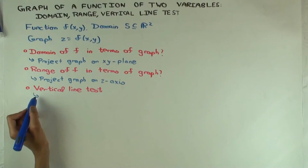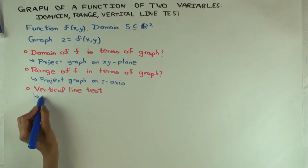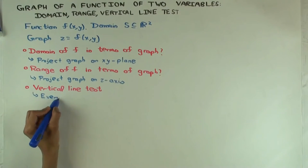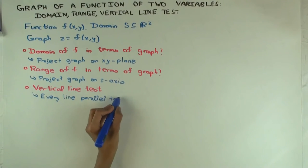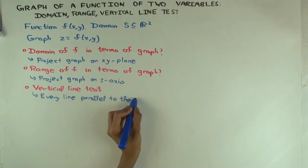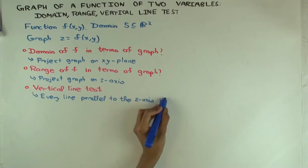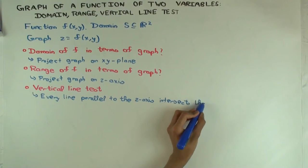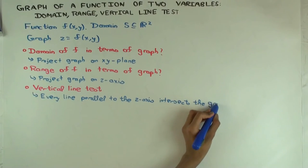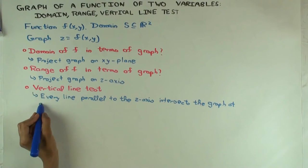Yeah, so it's perpendicular to the x-axis or parallel to the z-axis. So every line parallel to the z-axis intersects the graph at at most one point.